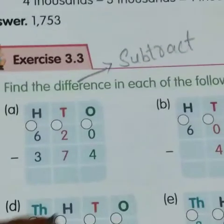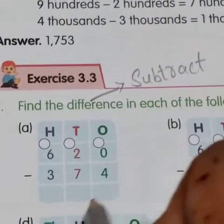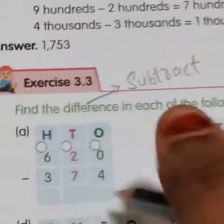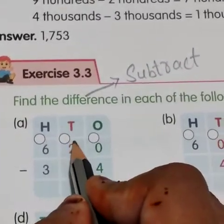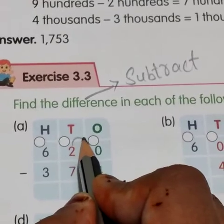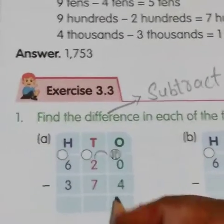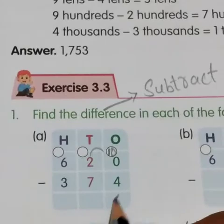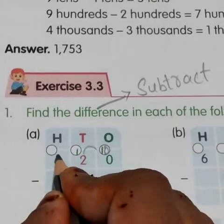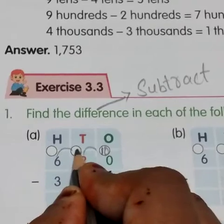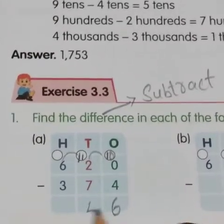The first question is 620 minus 374. So, 0 minus 4 we cannot do, so we have to take borrow from here. This will become 10. So, 10 minus 4 is 6. And this will become 1. Now 1 minus 7 we cannot do, so we have to take borrow. This will become 11. 11 minus 7 is 4.